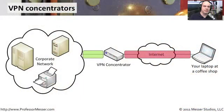VPN concentrators are becoming increasingly common. You can buy them now for your home office and use VPN software to connect back through an encrypted tunnel to your home office, where you can then print on your local printer even though you're somewhere else.